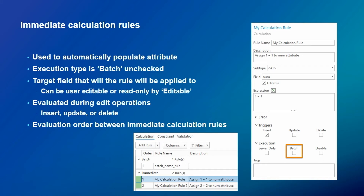Going over the details of immediate calculation rules: we use them to automatically populate other attributes. The batch checkbox should be unchecked to make this a calculation rule of the immediate type. You must specify the target field where the evaluation result is written. You can make those target fields editable or uneditable — uneditable meaning only this rule can write a value to the field. It's evaluated during insert, update, or delete operations, and you must specify the order relative to other immediate calculation rules.